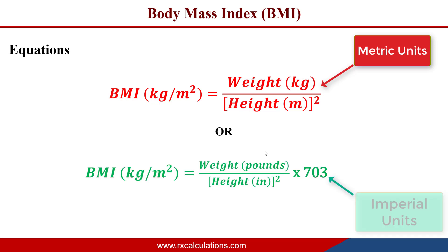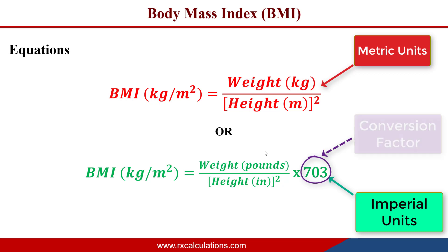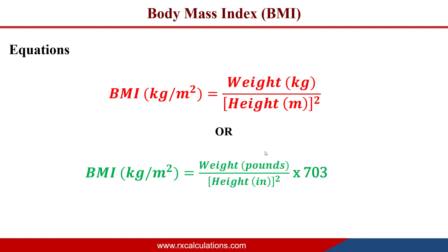If you choose to work in imperial units, the BMI is still expressed in kilograms per meter squared, but is equal to the weight in pounds divided by the square of the height in inches, times a factor of 703. The 703 is the conversion factor that converts from pounds per square inch to kilograms per meter squared. It's important to understand both equations so you can use the right one depending on the patient information you have.